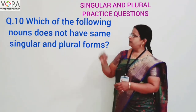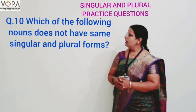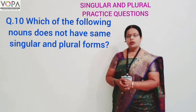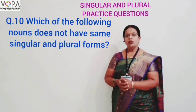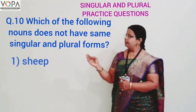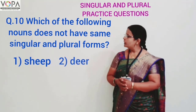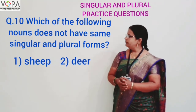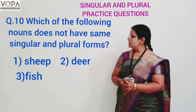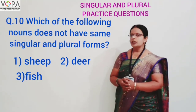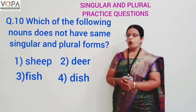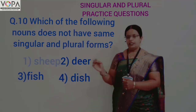Question nine (ten): which of the following nouns do not have the same singular and plural form? Option one: sheep. Option two: deer. Option three: fish. And option four: dish. The correct answer is option number four — dish.